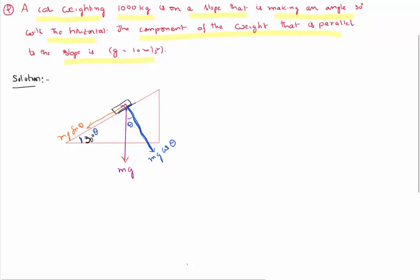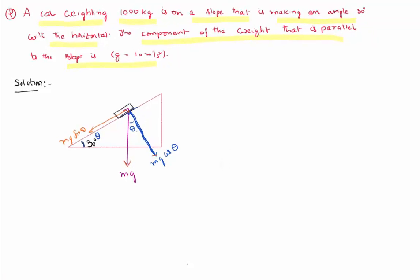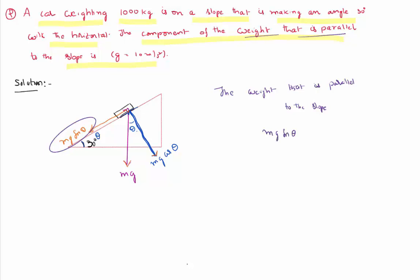If you notice, the vector is going away from the origin, therefore the components also go away from the origin, and these two vectors are always perpendicular to each other. It is clear that the force acting along the inclined plane is nothing but mg sin theta. So the weight that is parallel to the slope is equal to mg sin theta, where m is given as 1000 kilograms.